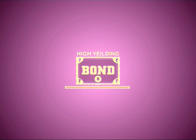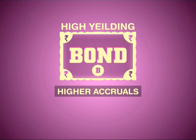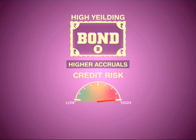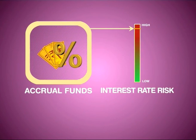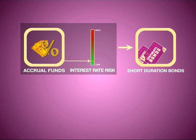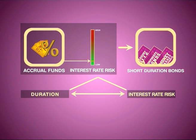These funds invest in higher yielding bonds for higher accruals by optimizing credit risk between high to moderate. They aim to lower the interest rate risk by investing in short duration bonds, as duration and interest rate risk are directly correlated.